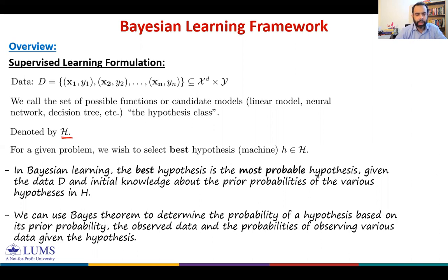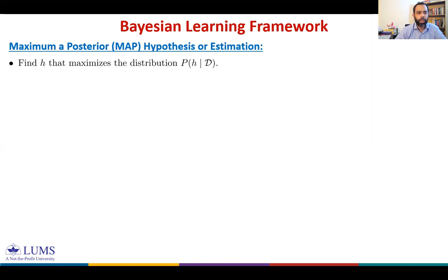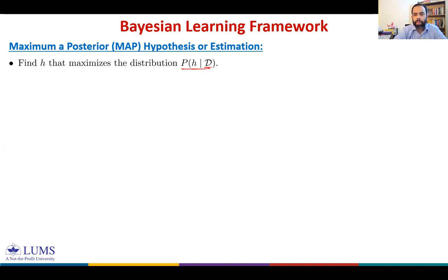Let's mathematically define this. We want to find h that maximizes the probability of hypothesis h being true given the data we have — P(h|D). We compute this for each h in the hypothesis class and select the hypothesis for which we have the maximum value. That is, we select the hypothesis that maximizes this probability.